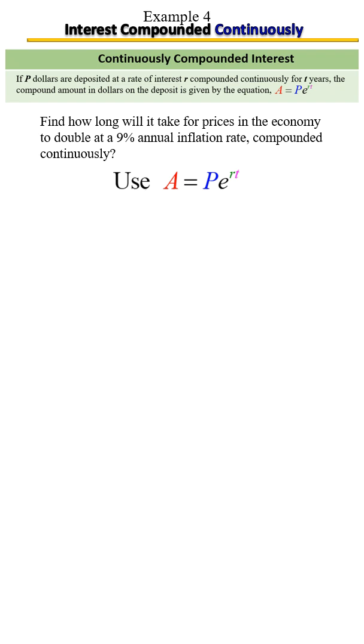How long will it take for prices in the economy to double at a nine percent annual inflation rate compounded continuously? So again, here is that keyword. When you see continuously, you know you're going to be using the formula which is A equals P times e raised to the rt.